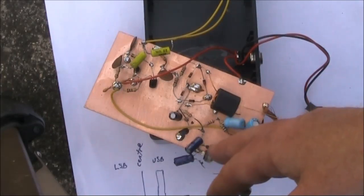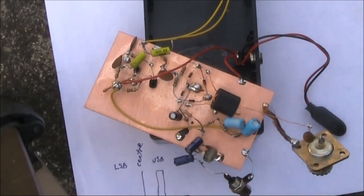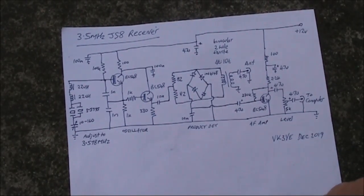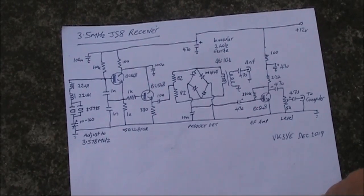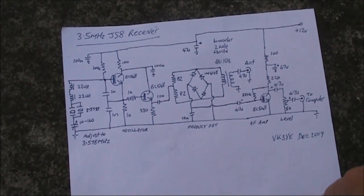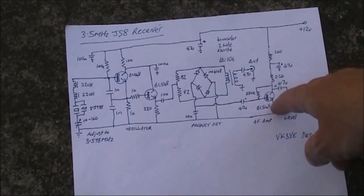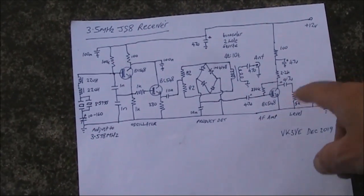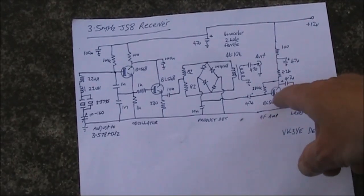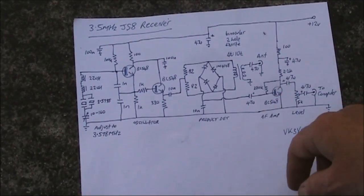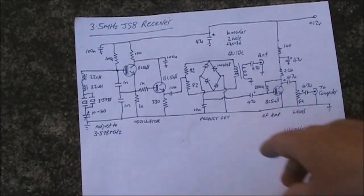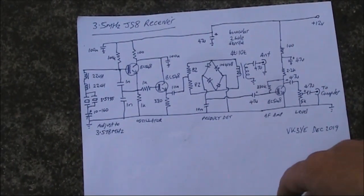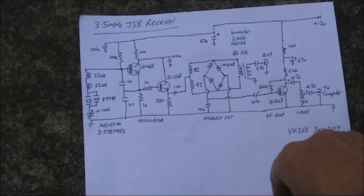In case you're wondering about the origin of the circuit, a lot of it is from my Beach 40, a 40 metre double sideband transceiver. I've simplified the audio amplifier. It doesn't need as much gain because the computer is contributing quite a lot. So that just needs to be one transistor. And I'm using a crystal instead of a ceramic resonator, just because the crystal happens to be very close to our desired frequency of 3.578.